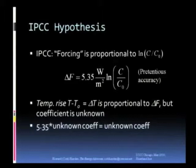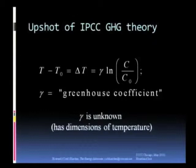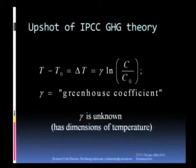Because the temperature rise that is supposed to accompany that forcing is supposedly then proportional to the forcing. But the coefficient is unknown, and if you take a known coefficient, multiply it by an unknown coefficient, you have an unknown coefficient. So the upshot is that the temperature rise, T minus T0, which I will call delta T, is equal to some coefficient gamma times the logarithm of C over C0, and I'm going to call gamma the greenhouse coefficient. Gamma is unknown, but it has the dimensions of temperature.